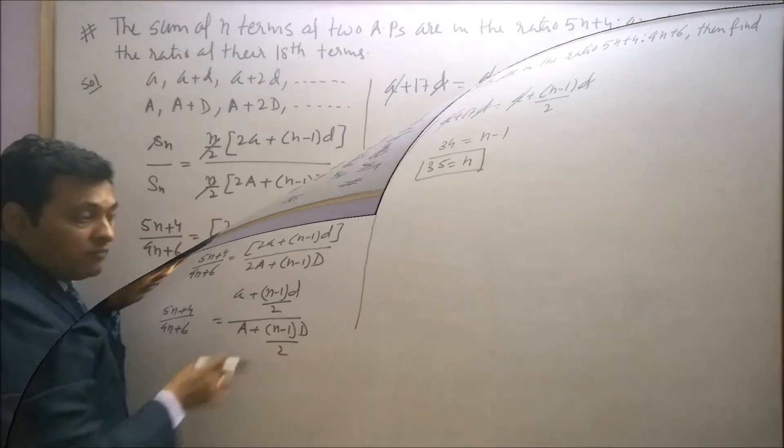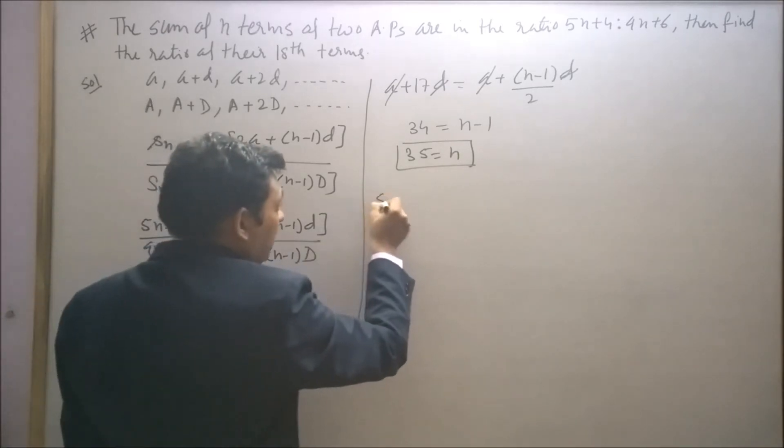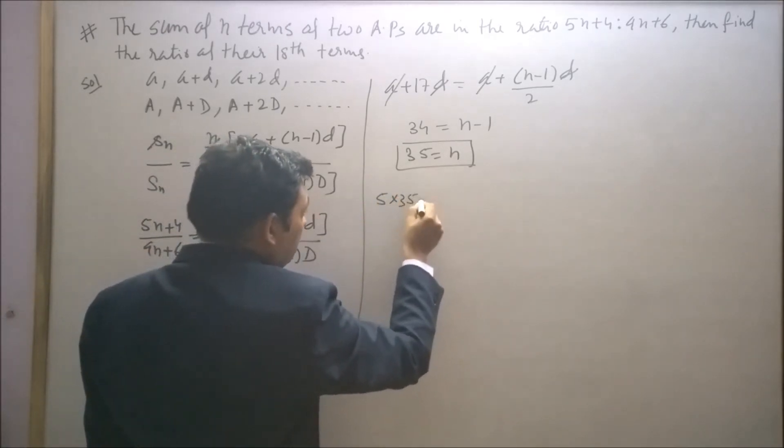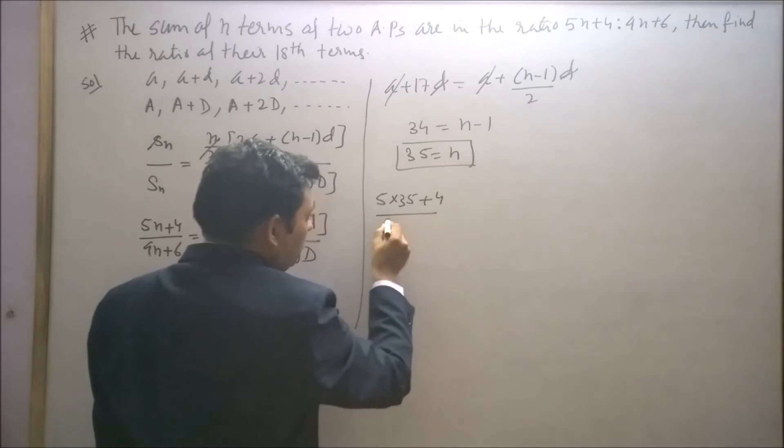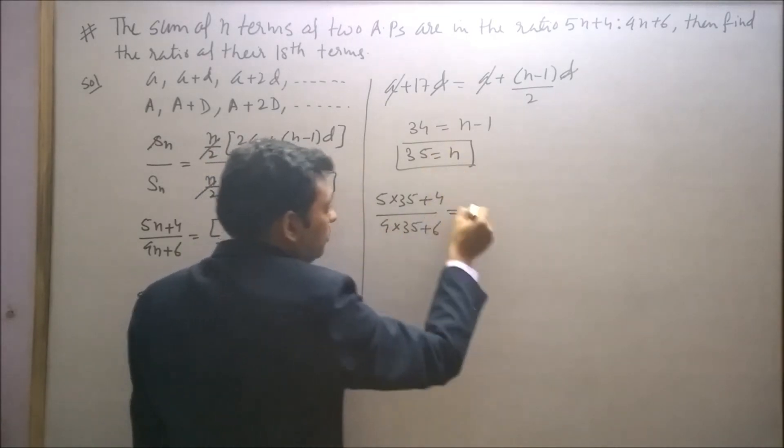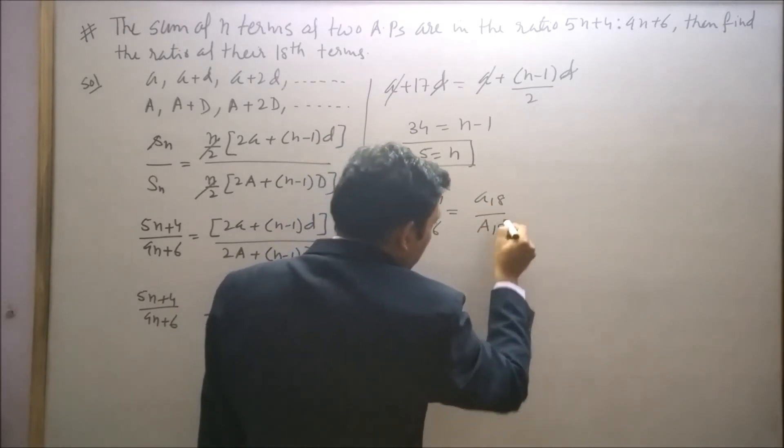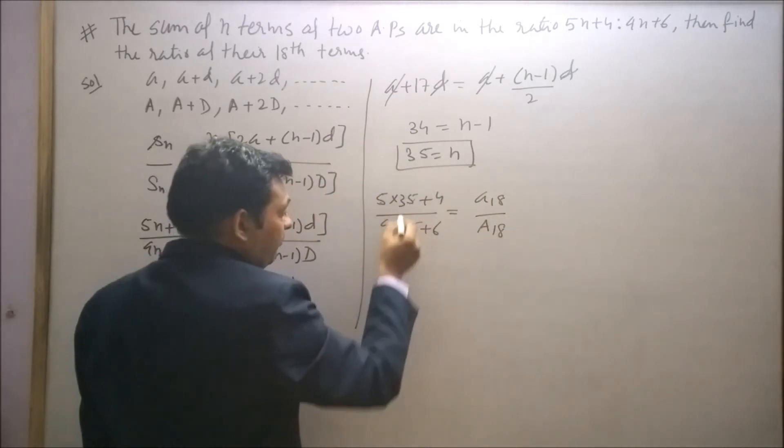N can be obtained by equating the 18th term of this second AP with this term. Now put the value of n here, 35. So 5 into 35 plus 4 upon 9 into 35 plus 6 will equal to a 18 upon capital A 18.